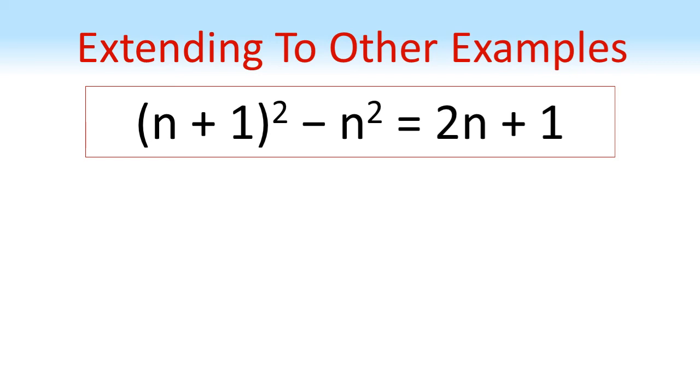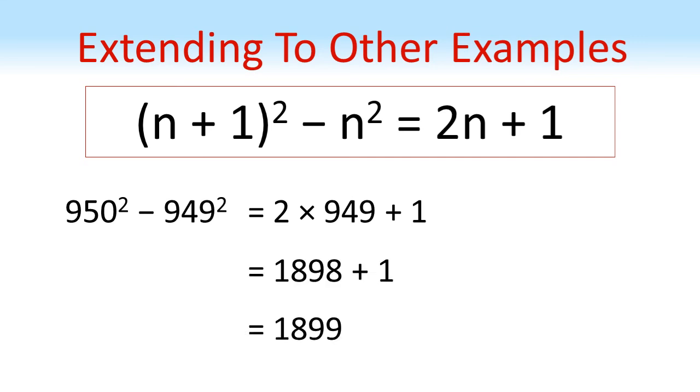This is even more handy with big numbers. Suppose we want to do 950 squared minus 949 squared. Putting that into our formula, we get 2 times 949 plus 1. Two lots of 949 are 1898. Adding the 1 quickly gives us an answer of 1899.